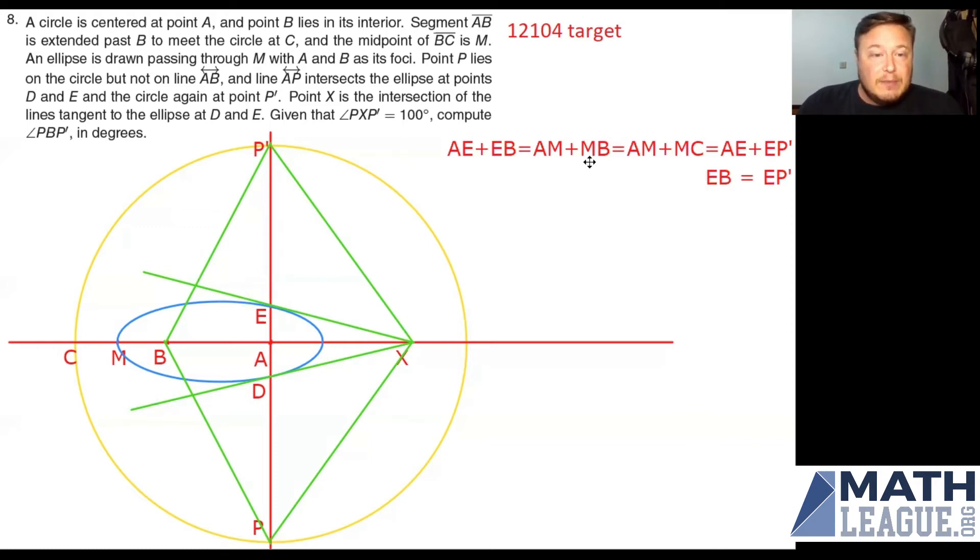Now AM plus MB, if you take a look at MB, we already said because M is the midpoint of BC that MB is the same as MC. So I'm going to replace my MB with an MC here. But take a look at this. If I have AM plus MC, that's the radius of the circle. And we've already got AP prime as the radius of the circle also, which is AE plus EP prime. So I started with AE plus EB, and I ended up with AE plus EP prime. What that tells us is that EB is equal to EP prime. Let me go ahead and draw in that extra line there.